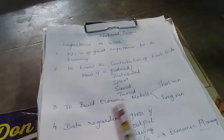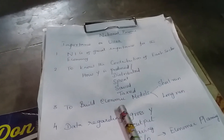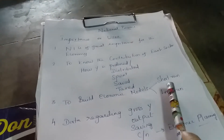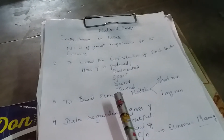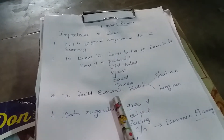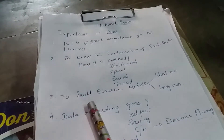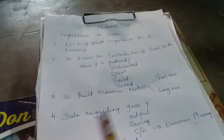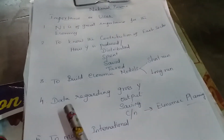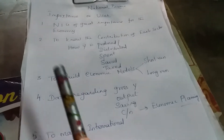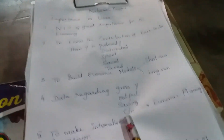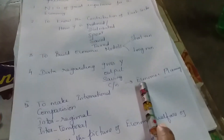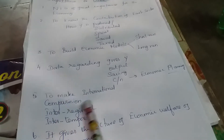To build economic models — whether we are going to build a short run model or long run model — we need to know our national income amount. Then only we can build our economic model. We need to gather data regarding national income calculation: gross income, output, saving, and consumption — that is for economic planning.